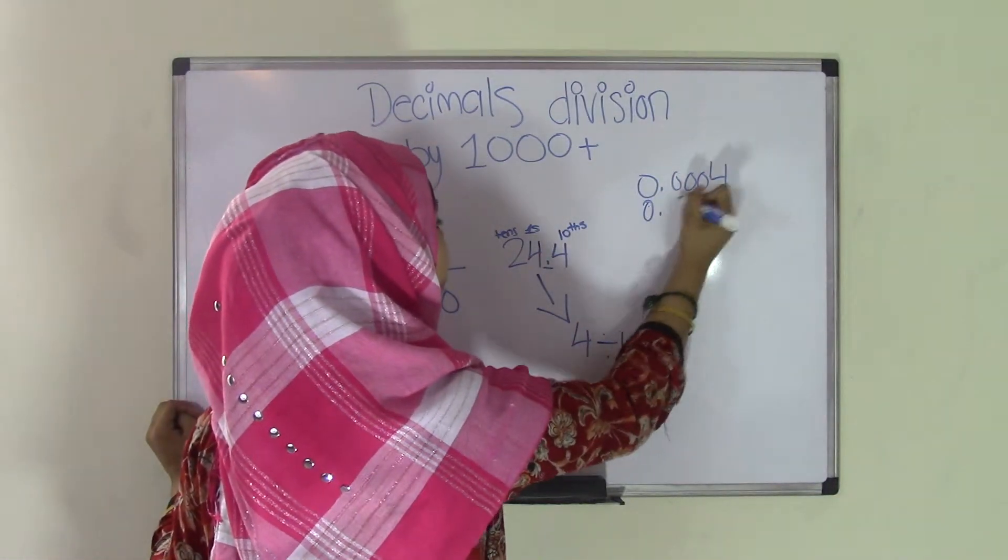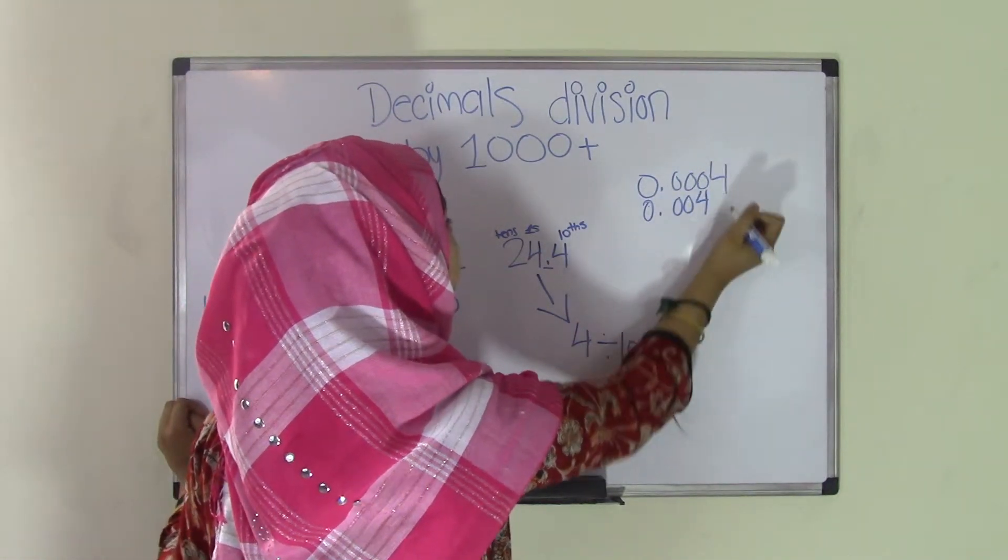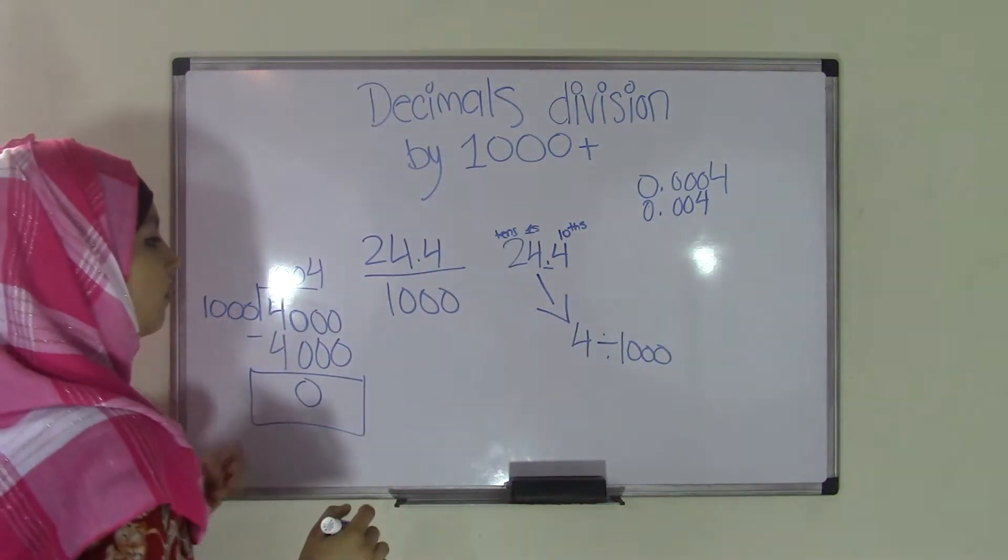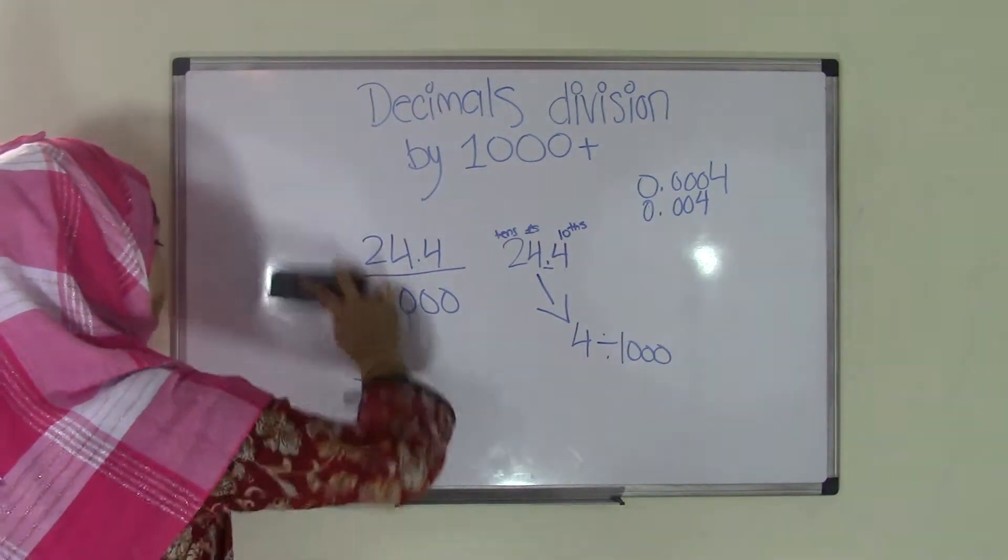That means the quotient will become 0.004. Come over here, you write 0.004. And you can just leave it like that. So we're done with the 4 right now.